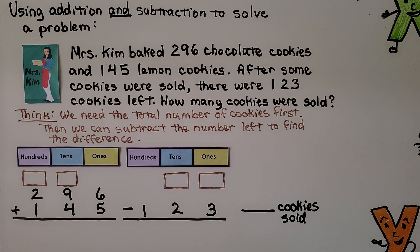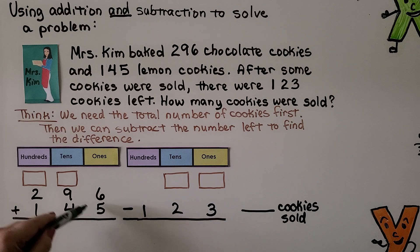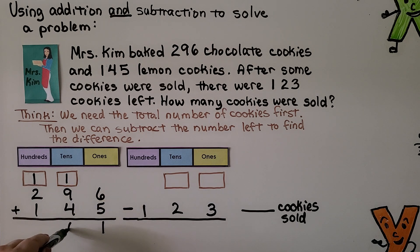This is using addition and subtraction to solve a problem. Mrs. Kim baked 296 chocolate cookies and 145 lemon cookies. After some cookies were sold, there were 123 cookies left — how many cookies were sold? We need to total the number of cookies first by adding chocolate and lemon. We start with the ones place: six ones plus five ones is eleven ones — regroup one ten, write one one. Nine plus ten plus four more is fourteen tens — regroup as one hundred and four tens. Now we add the hundreds: two, three, four. We have 441.